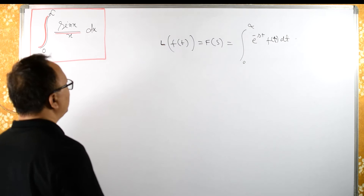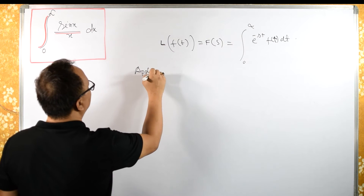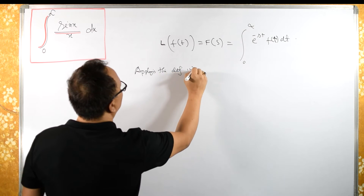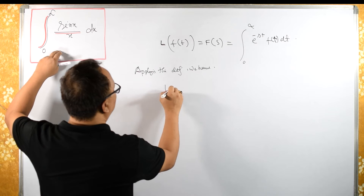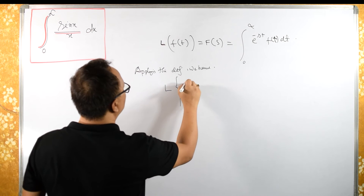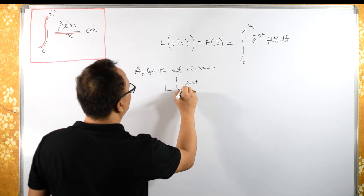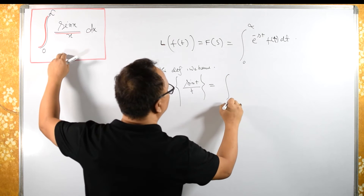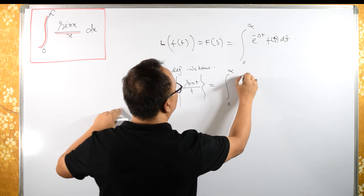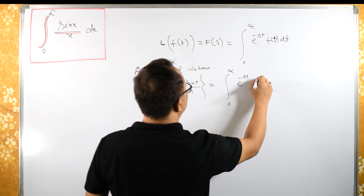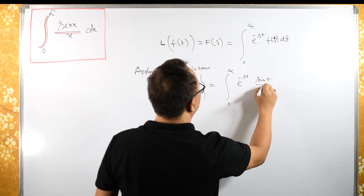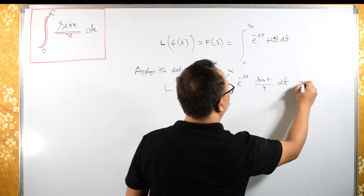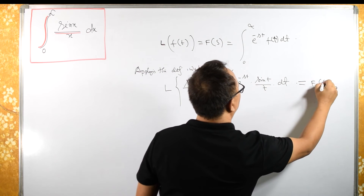Now, applying this definition, we have L{sin(t)/t} = ∫₀^∞ e^(−st) · sin(t)/t dt. This equals F(s).